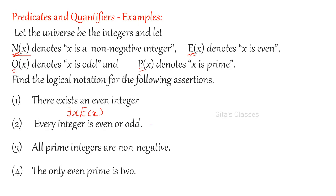Next: every integer is even or odd. Remember, the universe is the set of integers, so x is taken from the integers only. Every integer is even or odd means for all x, either E(x) or O(x). All the integers have to satisfy either E(x) or O(x). So the answer is: for all x, E(x) ∨ O(x).